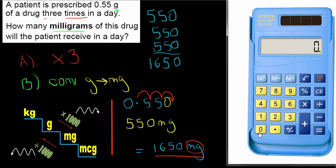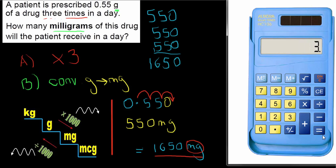Let's check with the calculator. The conversion: 0.55 times 1000 gives 550. Then 550 multiplied by 3 gives 1650. And just to confirm the order doesn't matter: 0.55 times 3 gives 1.65, then times 1000 still gives 1650 milligrams.